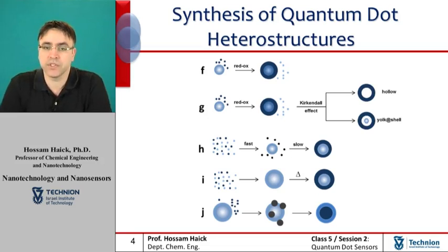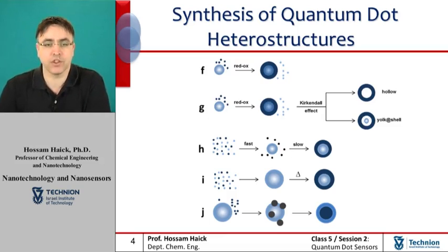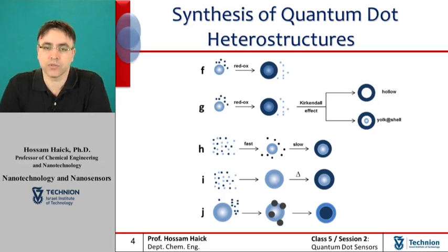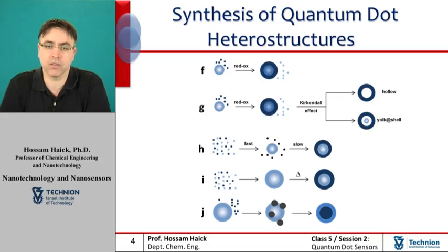Panel G shows a surface-confined redox reaction followed by hollowing via the Kirkendall effect. Sophisticated yolk-shell nanocrystals have been obtained through a mechanism similar to the so-called Kirkendall effect, which relates to an atomic diffusion process that takes place through vacancy exchange rather than by direct interchange of atoms. A net outward transport of matter from the core stimulates the formation of voids, as shown on the screen. Under sufficient supply of thermal energy, a large fraction of the vacancies can ultimately coalesce into a single large void.